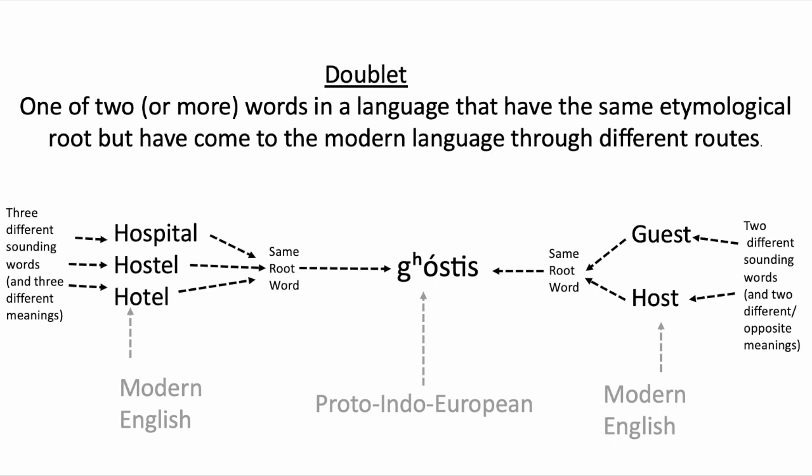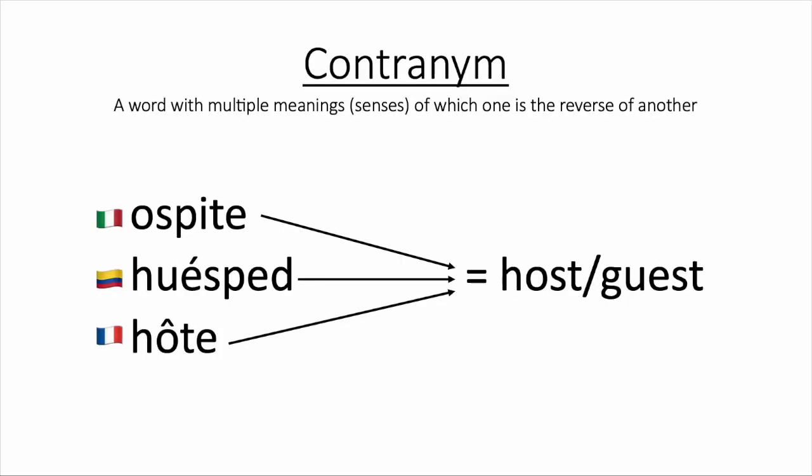What's interesting is that many modern languages use the same word for guest and host to represent the reciprocal and contradictory meanings that their common root — the single Proto-Indo-European word chostis — likewise sought to convey. Such words are called contranims. For example, the Italian word ospite, which means both guest and host.